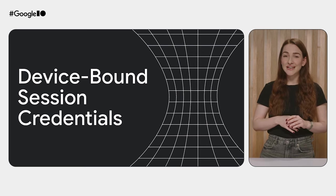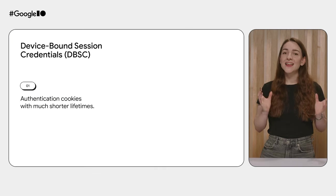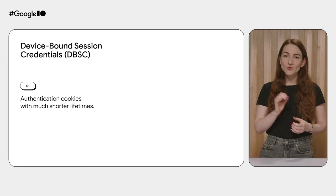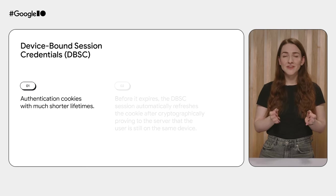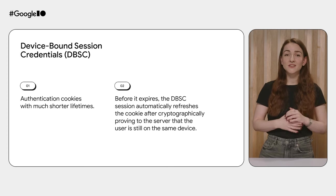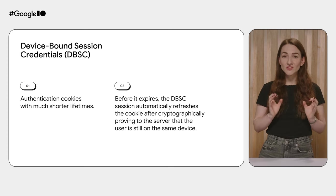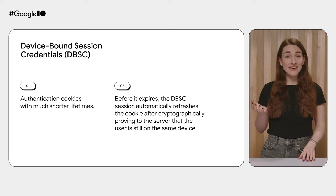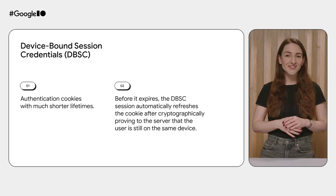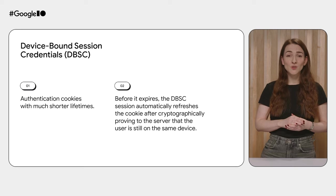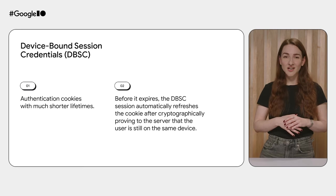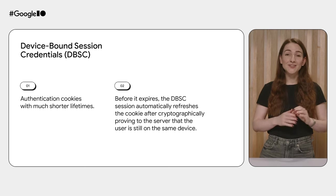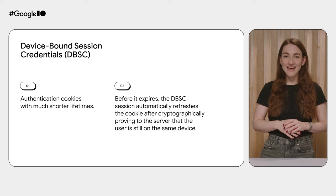Device-bound session credentials allow sites to keep using authentication cookies, but with much shorter lifetimes — in the range of a few minutes. Before it expires, the session automatically refreshes the cookie after cryptographically proving to the server that the user is still on the same device. Chrome is developing this capability as a web standard in collaboration with popular identity providers and browser vendors, to ensure it's practical to deploy on both small and complex sites like google.com. We're prototyping it right now between Chrome on desktop and google.com and plan to collect candidates for origin trials towards the end of 2024.